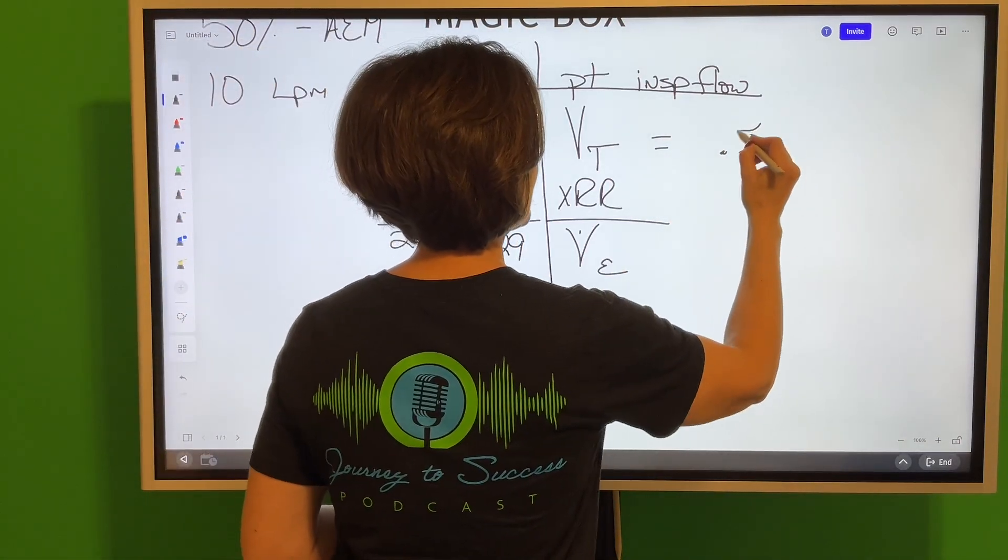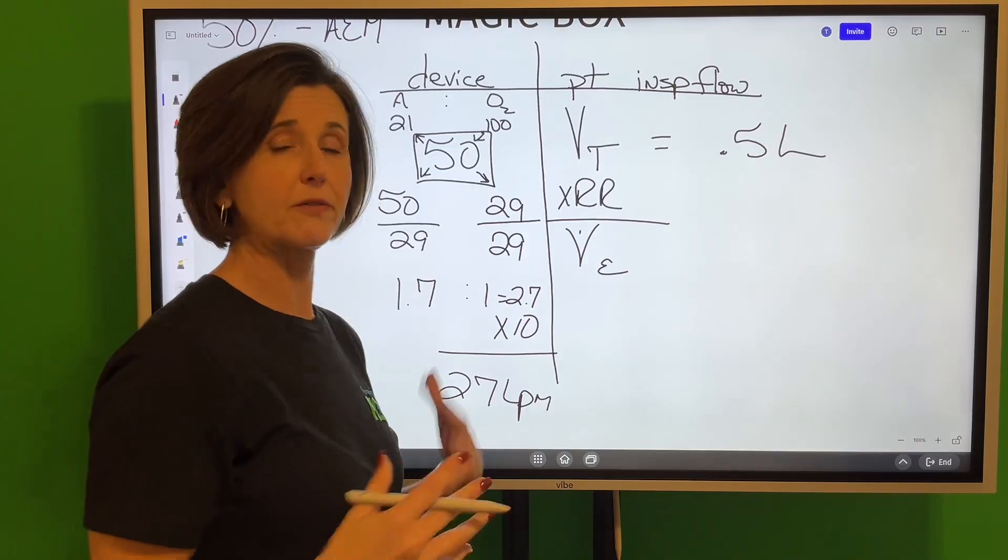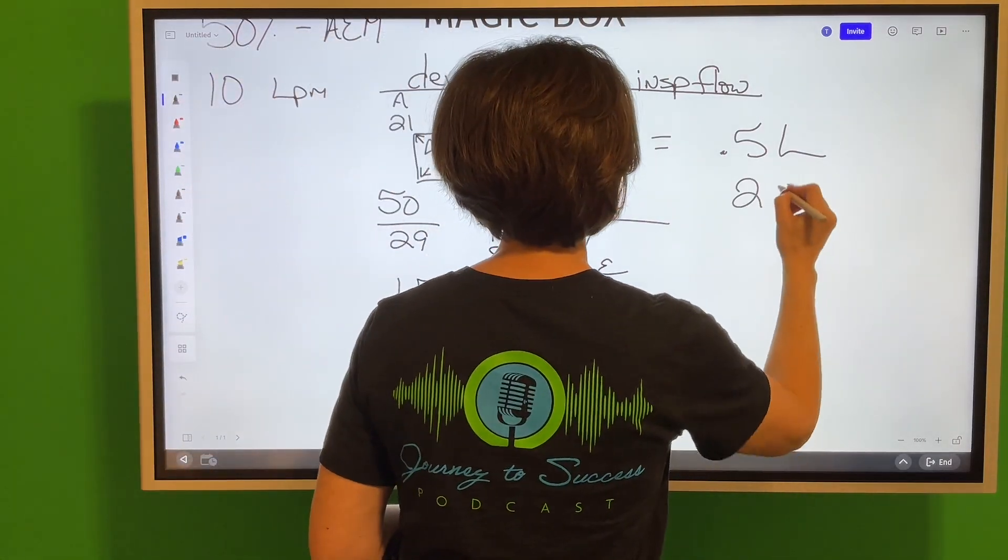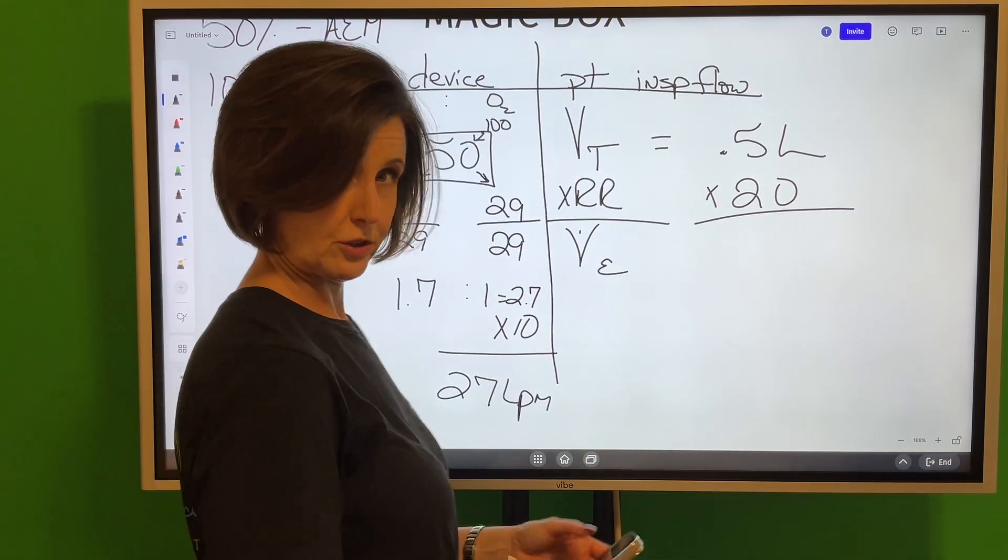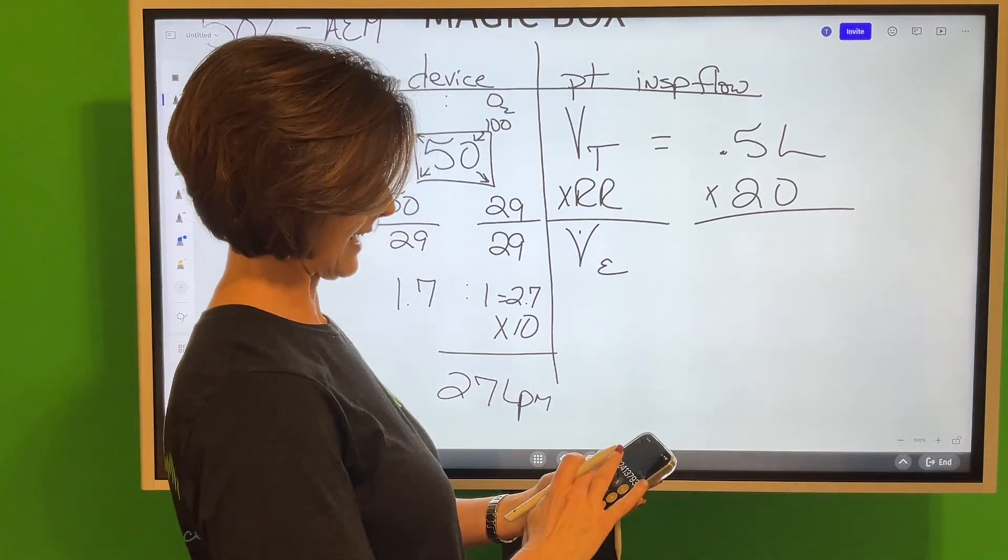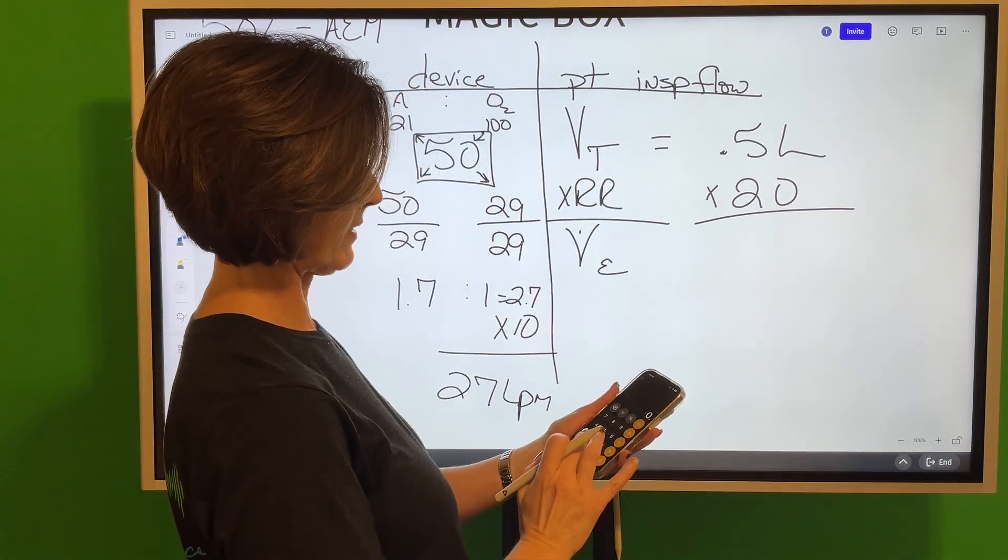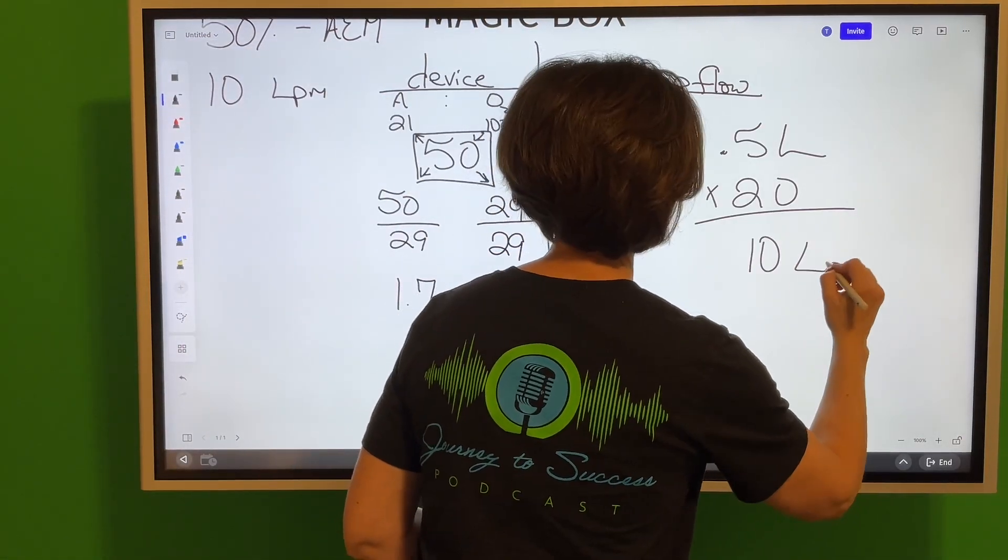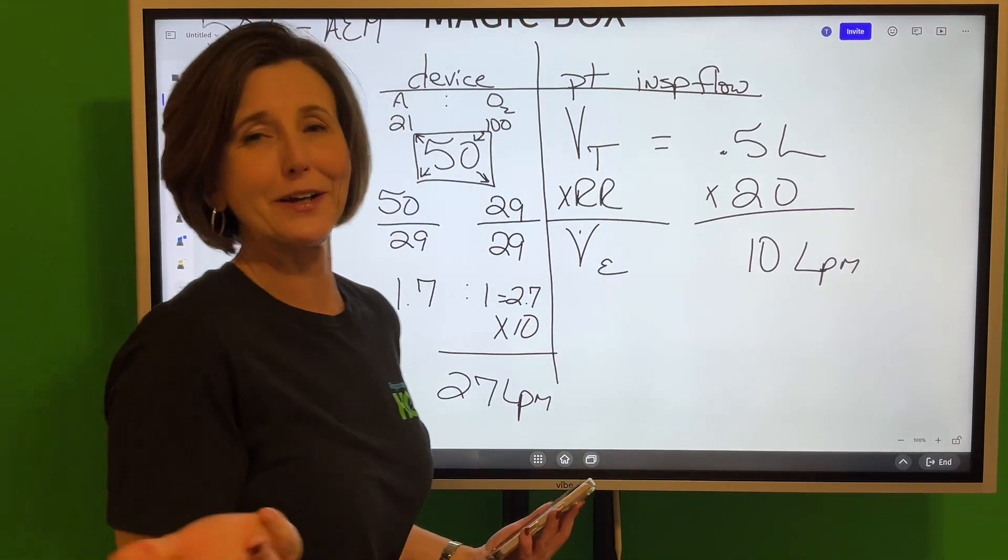All right, so I'm going to say our tidal volume is 0.5 liters, could have also said 500 milliliters, and the respiratory rate is 20. So when you take, let's just do the math and make sure everything's absolutely perfect, when we take 0.5 times 20, we have 10 liters per minute. That's their minute volume.